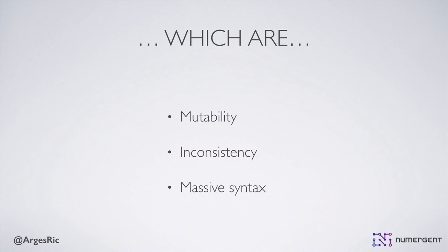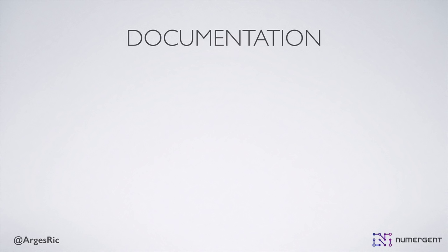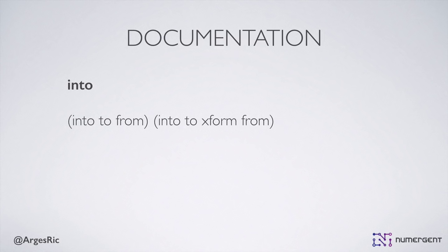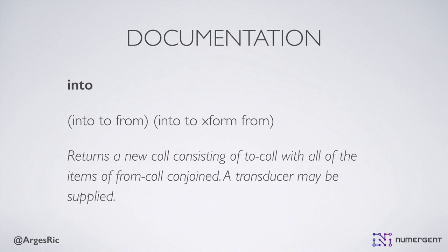The second scary thing is likely to be documentation. I have a friend Raul, who's a programmer, and I've been shoving Clojure down his throat for a few months now. He runs into this function, INTO. The documentation signature is INTO, TO, FROM — INTO, TO, X, FROM — which by itself is not exactly explicit. Then they top it off with this description: 'Returns a new coll consisting of to-coll with all items of from-coll conjoined. A transducer may be supplied.' That's the official documentation.